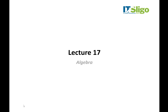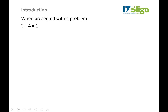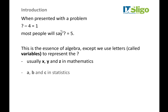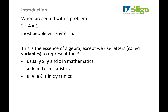Welcome to lecture 17, the first algebra lecture. When presented with a problem like 'something minus 4 equals 1,' most people would say the answer is 5. This is really what algebra is all about, except instead of question marks we use letters. There are lots of letters so we can have lots of different unknowns in a problem. The letters change all the time but they all just represent numbers, so all the rules we've learned so far absolutely apply to everything in algebra.